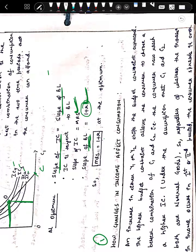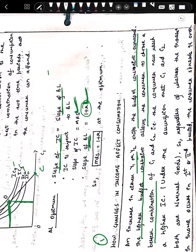Now we are going to discuss how changes in income affect consumption. An increase in either Y1 or Y2 shifts the budget constraint outward — whether income increases in time period one or time period two, the budget constraint shifts outward. If it decreases, it will shift inward. The higher budget constraint allows the consumer to choose a better combination of consumption in time period one and time period two, and he will move to a higher indifference curve, under the assumption that both C1 and C2 are normal goods.